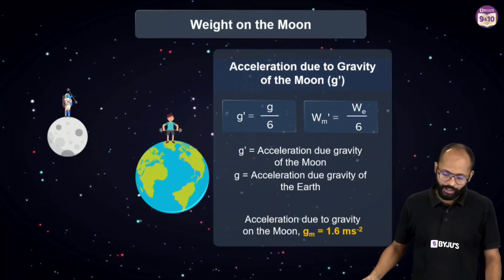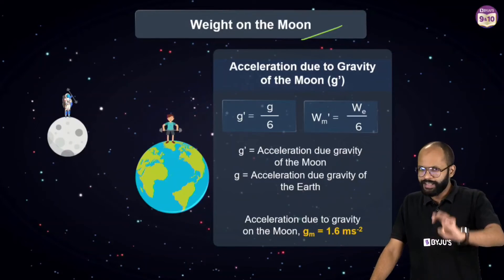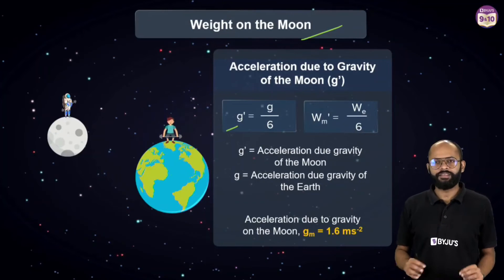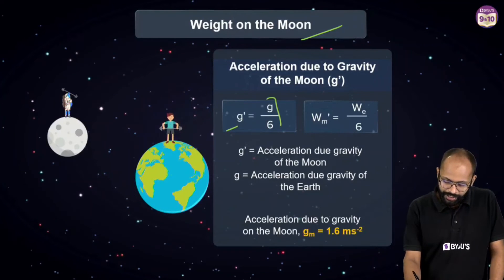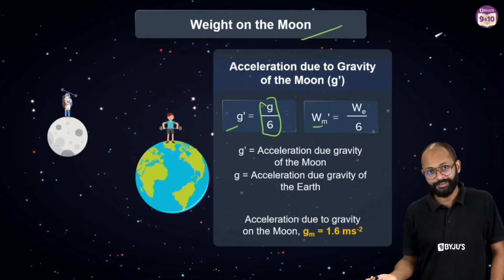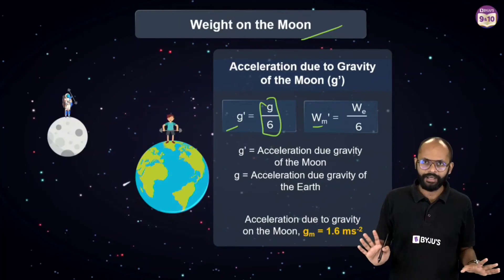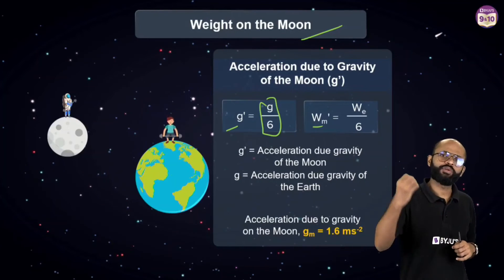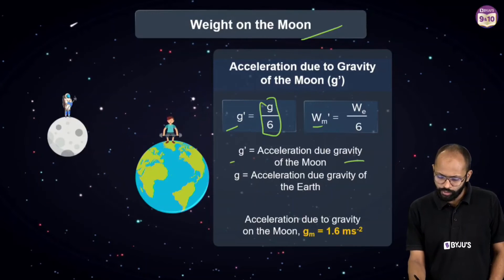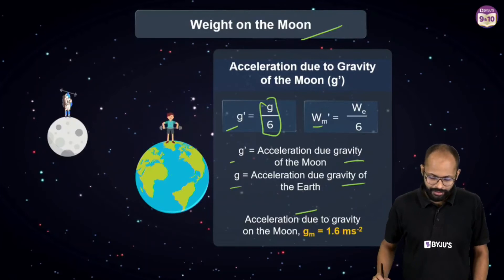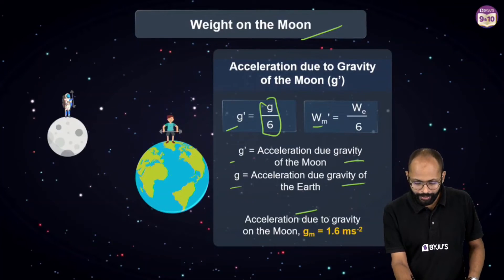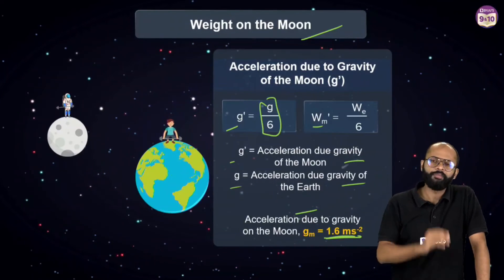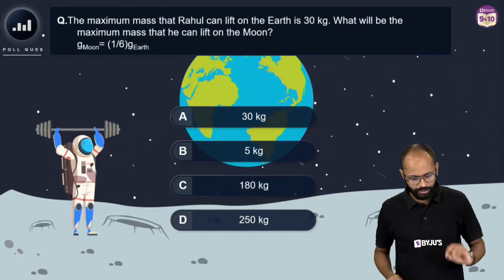Now let's talk about weight on the moon. The acceleration due to gravity on the moon is g/6 — this was the homework from the previous video. So the weight on the moon is (weight on earth) / 6. The acceleration due to gravity on the moon, gₘ, equals 1.6 m/s². The key value to remember: g on the moon is 1/6 of g on earth.